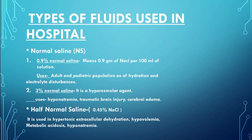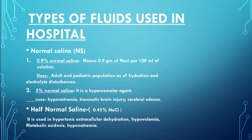The first type of fluid used in hospitals is normal saline. Basically, normal saline comes in three types: 0.9% normal saline, 3% normal saline, and half normal saline or 0.45% NaCl.